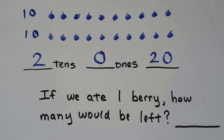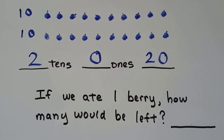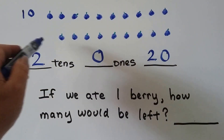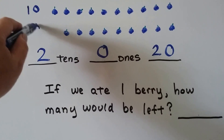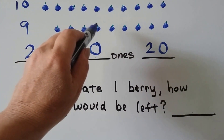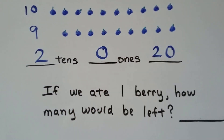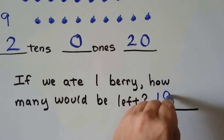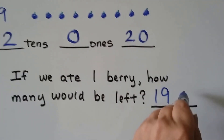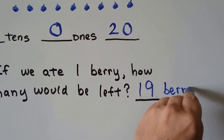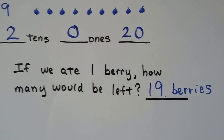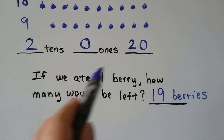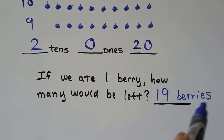Now what if we ate one berry? How many berries would be left? Well, if we ate one of these berries, there wouldn't be ten here anymore. I took one away. Now there would be nine. One, two, three, four, five, six, seven, eight, nine. Ten plus nine — that would be nineteen berries. Nineteen is one less than twenty. We write 'berries' because it's a word problem and we need to label it. And the Y in berry becomes IES when we make it plural.